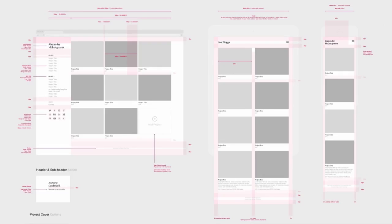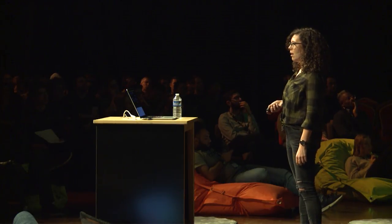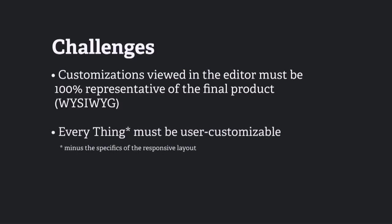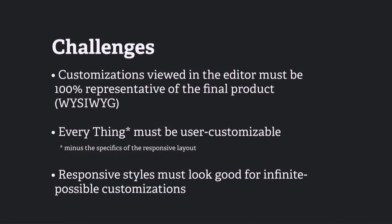What this means for us as developers of this product is that we can get specs for a layout from our designers and we can build the layout to that spec. But when we hand it off to the user, we have no idea what they're going to change about this website — and this is what I mean when I say Schrödinger's website. We can build the layout that our designers designed, but we have no idea yet what the end user is going to design themselves. The customizations you see in the editor must be 100% accurate representations of what you get on your final published website. Everything must be user customizable, and the responsive styles must look good for an infinite possible set of customizations.